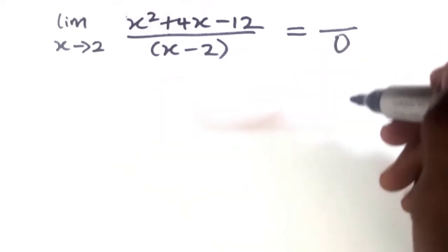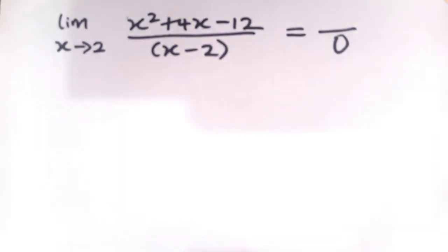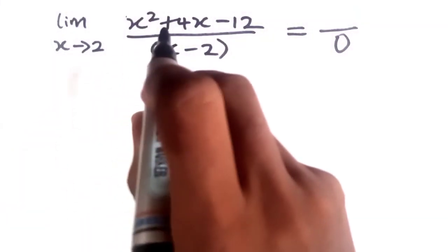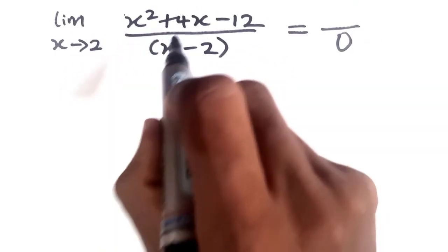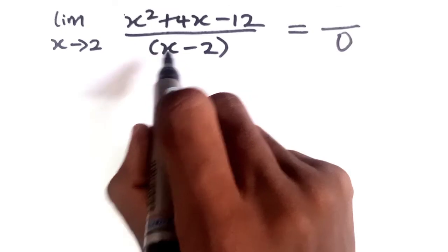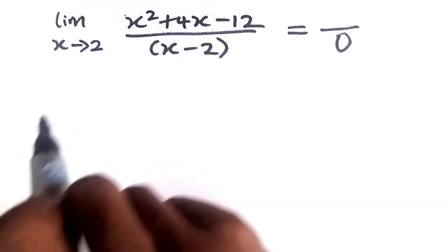So what we are going to do is factorize the numerator, and one of the factors of this numerator should be equal to the denominator so they will cancel out, and when they cancel out we can easily find the limit of the function.